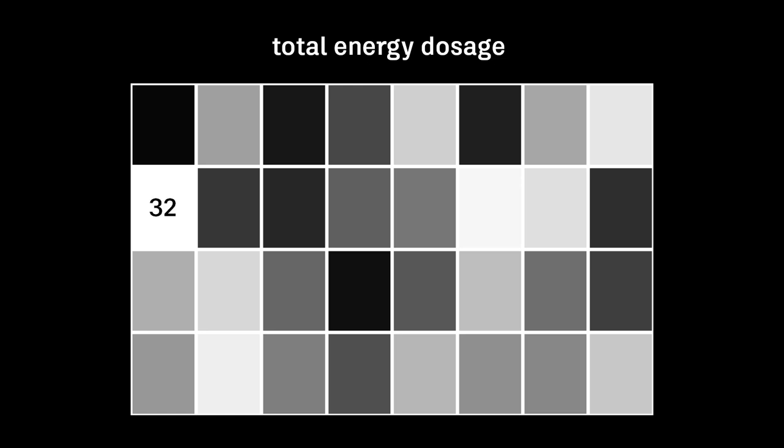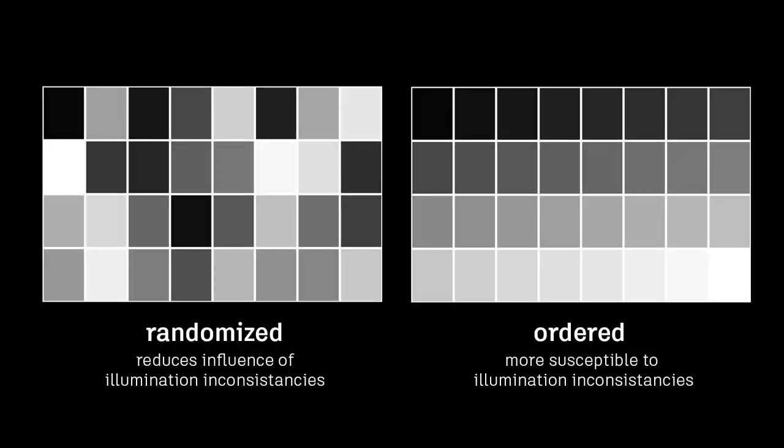The rectangle that is illuminated in every slice receives 32 times the energy as a rectangle that is only illuminated in the first slice. The pattern is randomized to minimize the effect of possible unequal illumination across the build area.